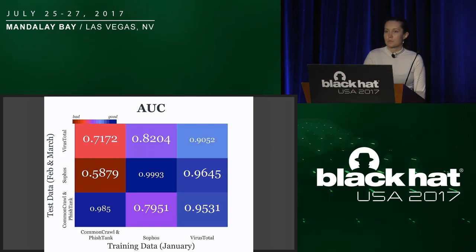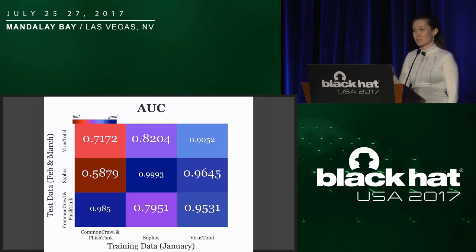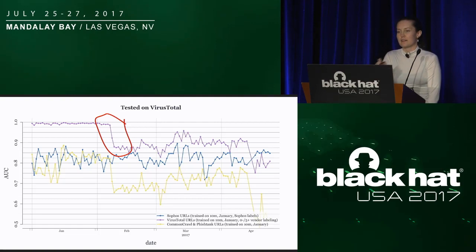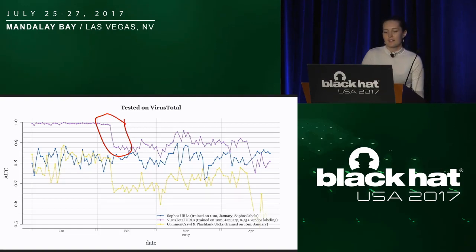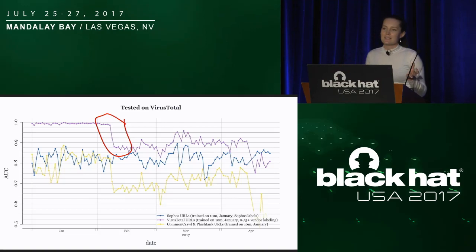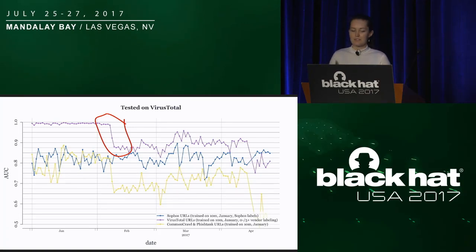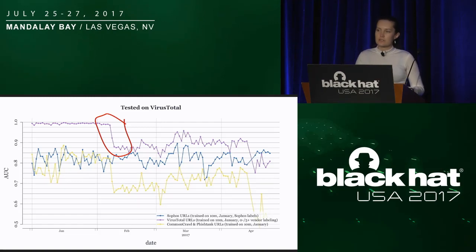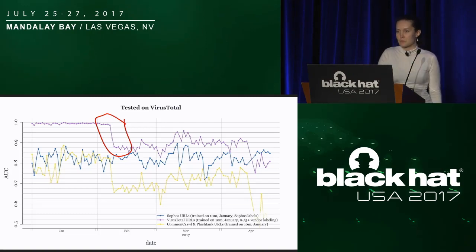Knowing this, we might actually choose the VirusTotal trained model to deploy if we're really unsure about deployment data. This next plot shows the top row of the last plot over time. The purple line is our VirusTotal model tested on VirusTotal data over time — doing pretty well in January, then experiencing a big drop in February. That was because a very common domain in the VirusTotal data set flipped labels. In January most vendors said URLs from this domain are fine, and in February more and more started saying they're malicious. Because our model was trained on data from January, when tested on February data it started to have bad results because the state of the world had changed.